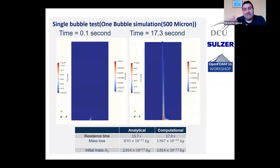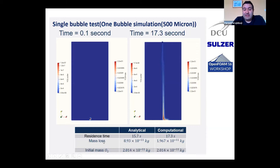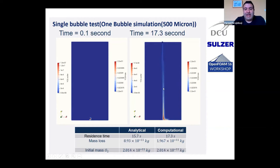We tested our model with the new drag and mass transfer using a single bubble test: a 500-micron bubble was released and allowed to rise. We calculated analytically the mass loss versus the computational result as a function of initial oxygen content inside the bubble. The analytical mass loss is about four times more than the initial mass because the analytical solution assumes an infinite source of oxygen, whereas the computational model uses a finite source. At initial times both agree, and when we run the computation with an infinite source of oxygen the analytical and computational results match very well.